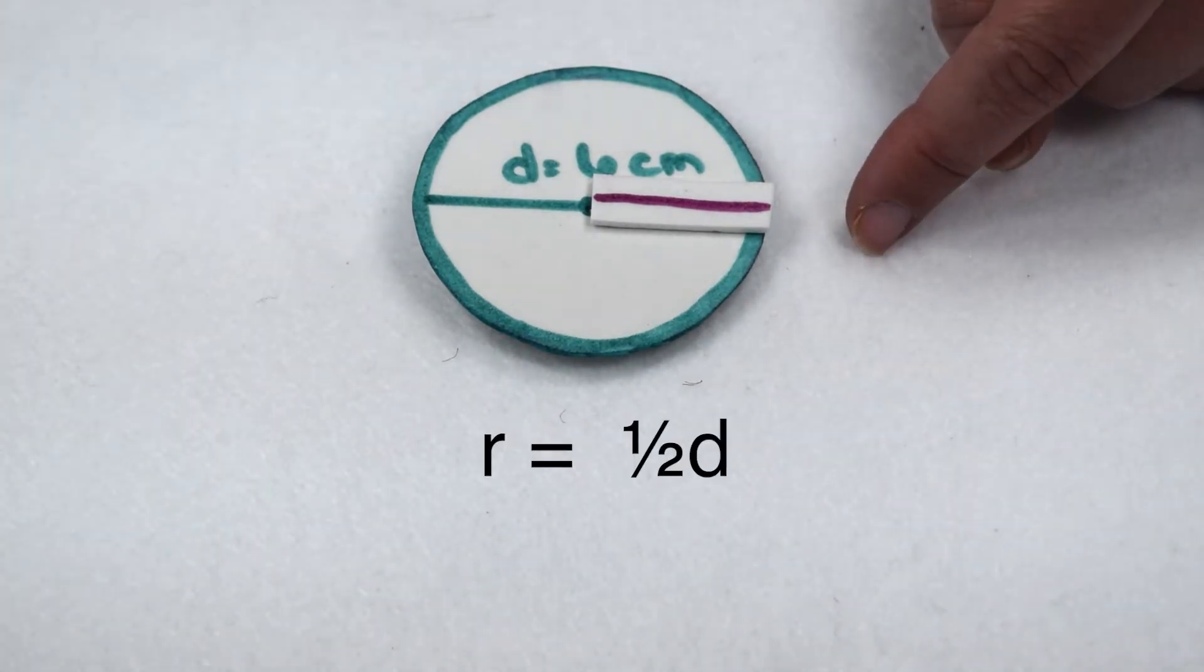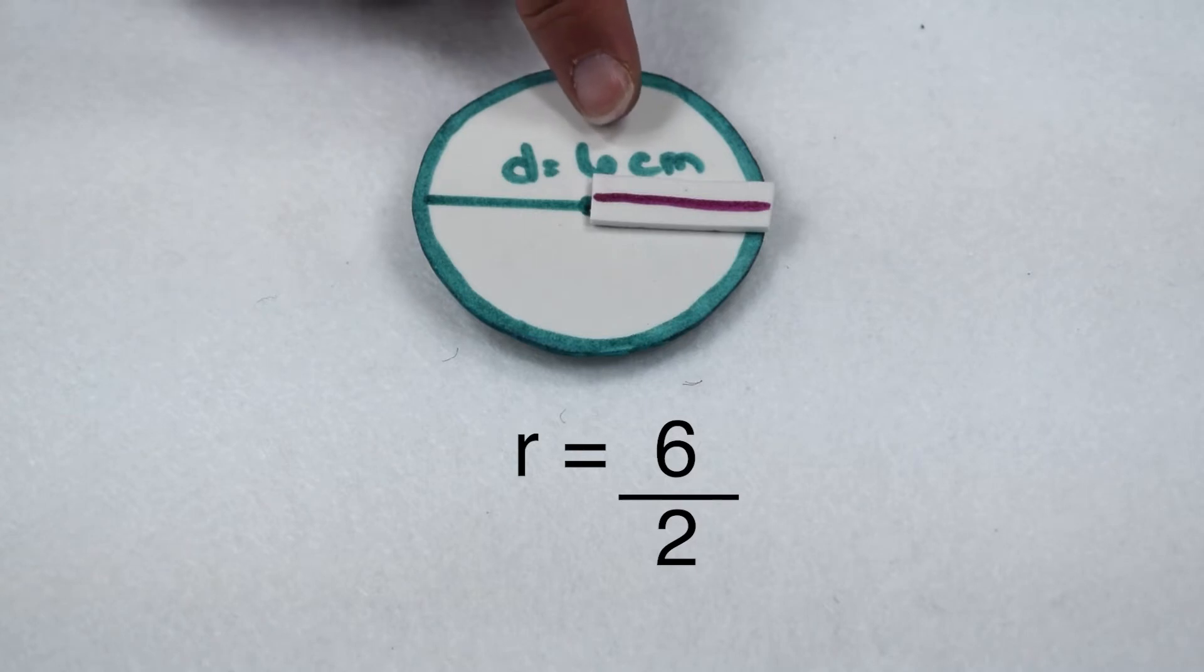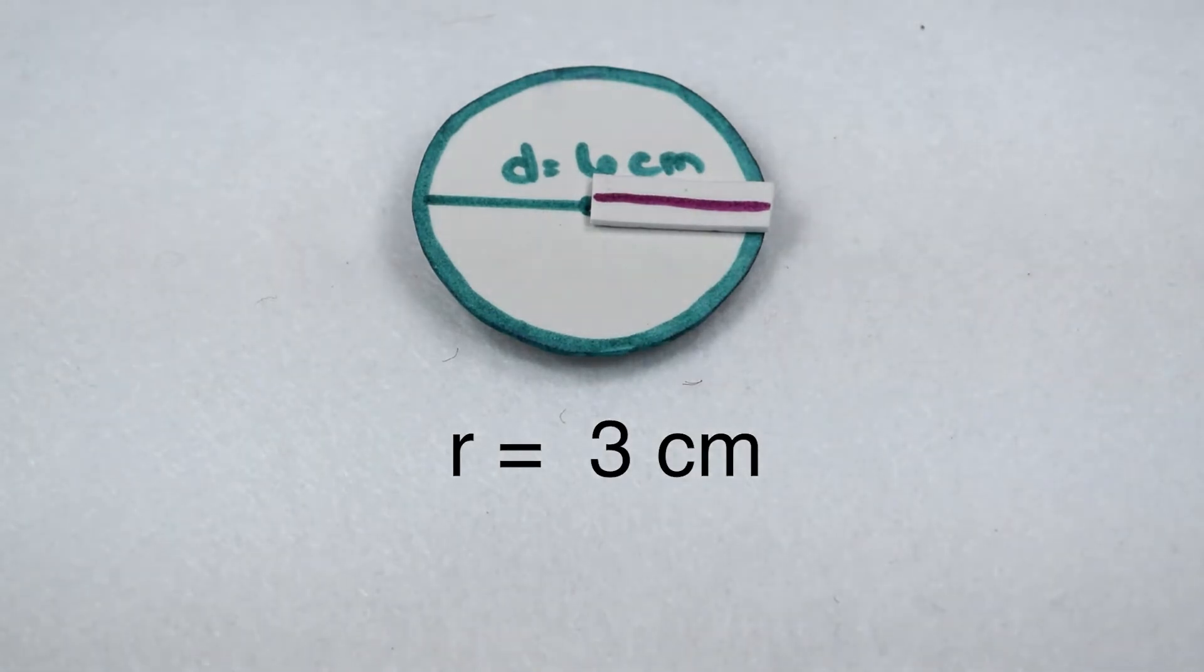This tells us that our radius is worth half the diameter. In other words, to find the radius, I would need to do diameter divided by two. So here, our circle has a diameter of six centimeters. I'm going to divide that by two, and that tells me that the radius of this circle is going to be three centimeters.